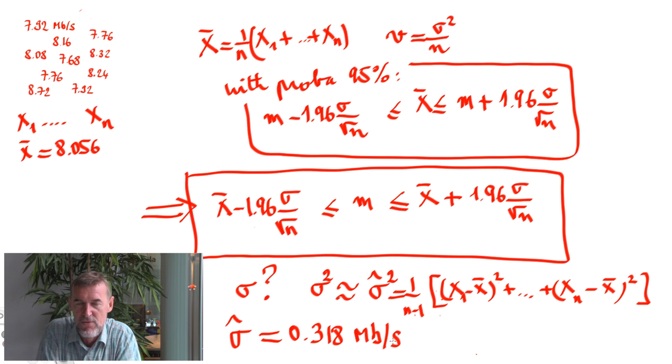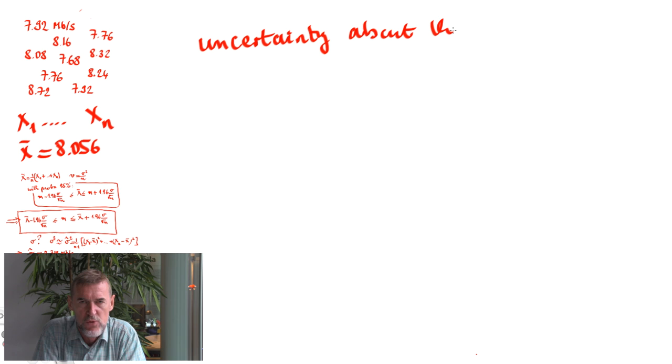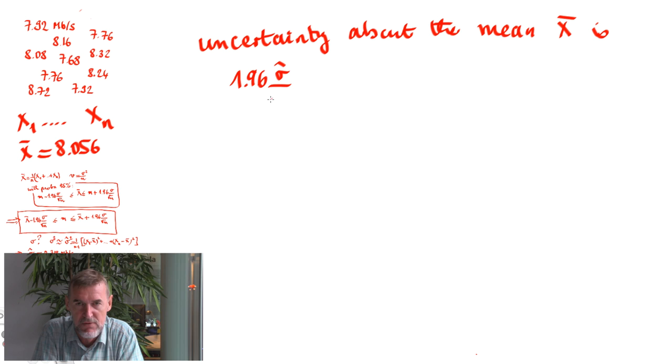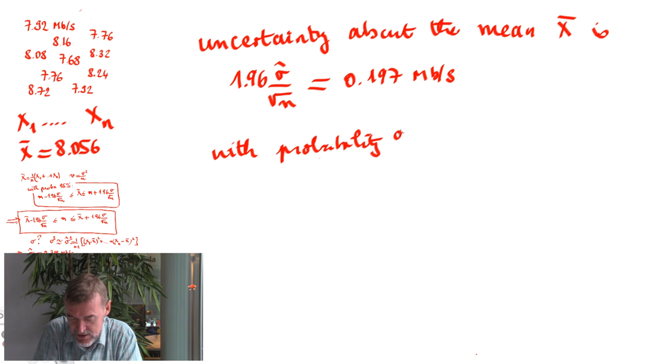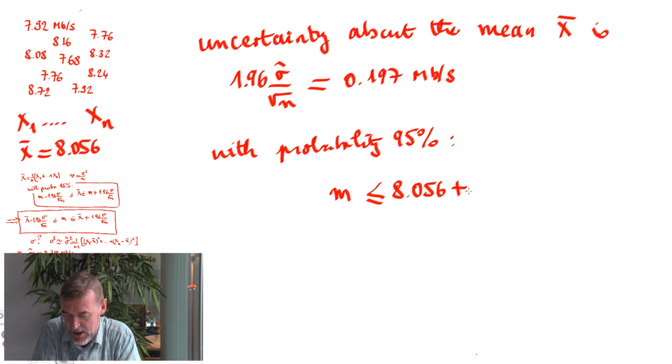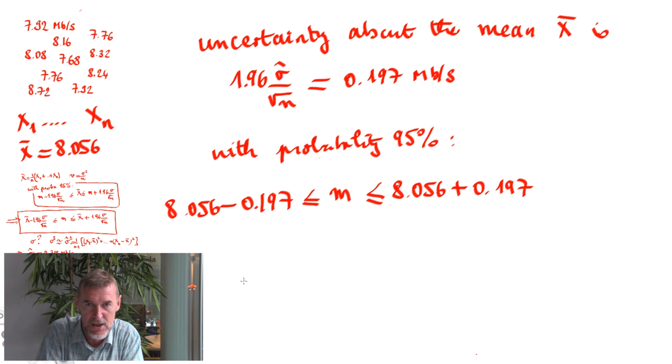For our set of 10 data points, we obtain sigma hat equal 0.318 megabit per second. Therefore, the uncertainty given by this formula about the mean is 1.96 sigma hat divided by square root of n gives 0.197 megabit per second. Putting all of this together, we can say that with probability 95%, the unknown mean m of our simulator is between 8.056 plus or minus 0.197. This is the confidence interval for the mean.